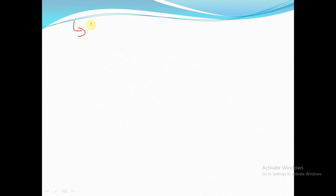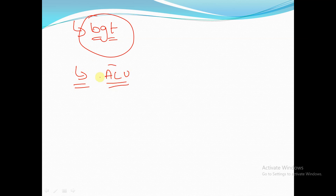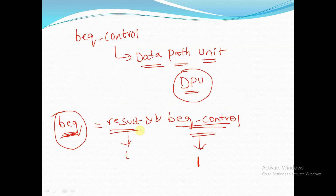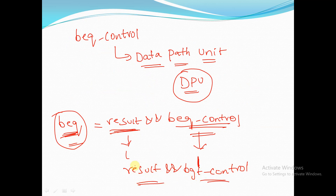Now for BGT — branch greater than — everything is the same except the process in the ALU. Instead of comparing whether the contents are equal, we compare whether RS1 is greater than RS2. If RS1 is greater, the result is 1; if less, the result is 0. If result is 1, it is ANDed with the BGT control signal to produce the BGT output.